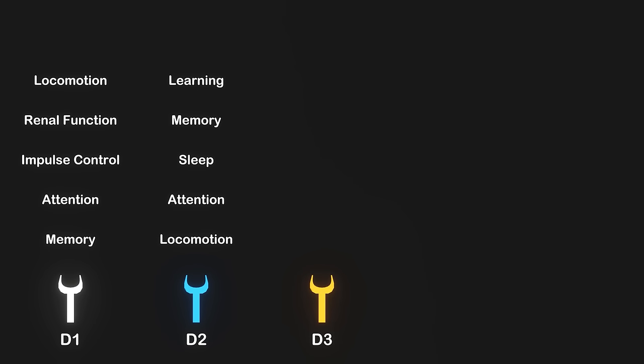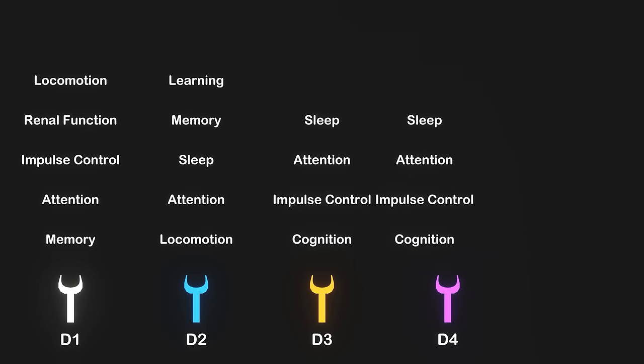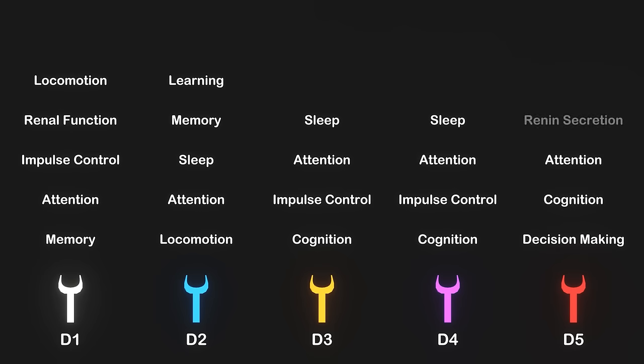The D3 receptor is involved with cognition, impulse control, attention, and sleep. We also know that D4 also tends to be involved with the same processes that D3 is involved with. In the case of D5, it has a role in decision making, cognition, attention, and renin secretion.